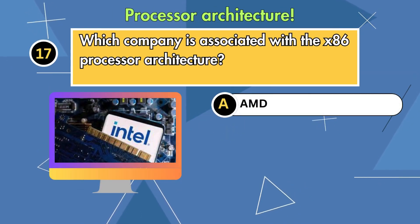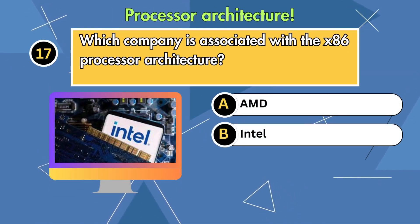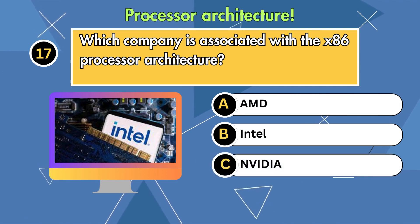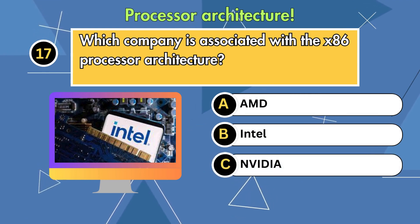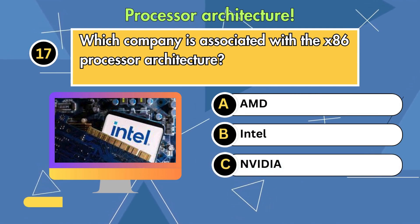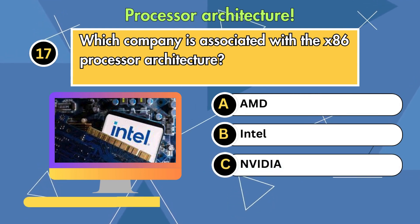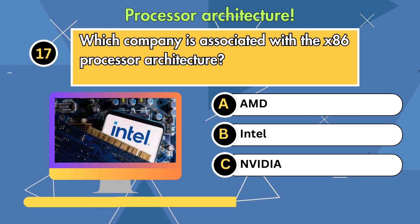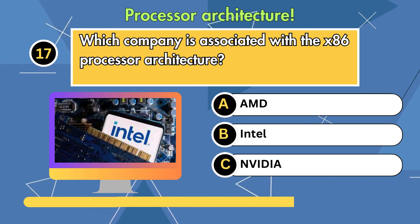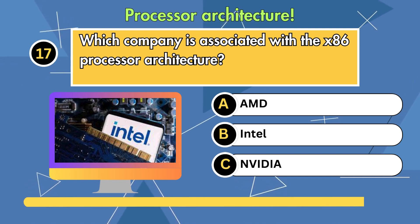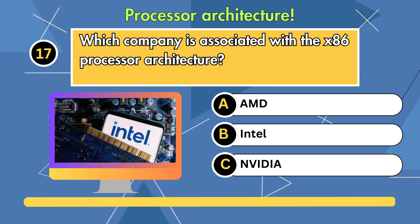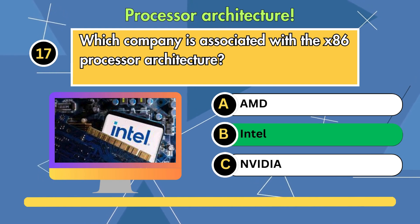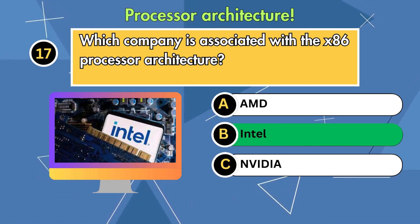Question 17. Which company is associated with the x86 processor architecture? Option 1: AMD. Option 2: Intel. Option 3: NVIDIA. Answer is Intel.